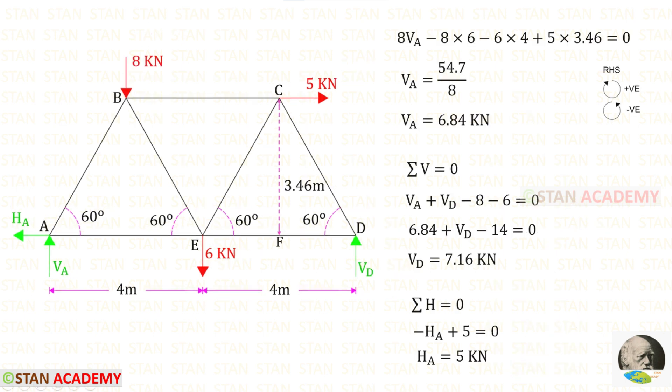We need to find the horizontal reaction HA and the vertical reactions VA and VD. In the method of joints, I have already explained how to find the reactions — you can click the link in the description and watch that video.